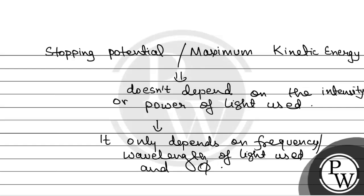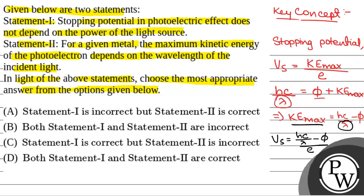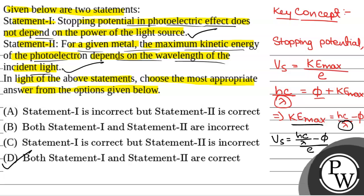So from here we can see that Statement 1 — stopping potential in photoelectric effect does not depend on power of light source — is correct. And Statement 2 — for a given metal, the maximum kinetic energy of the photoelectron depends on the wavelength of incident light — is also correct. So the correct option is option D: both Statement 1 and Statement 2 are correct.